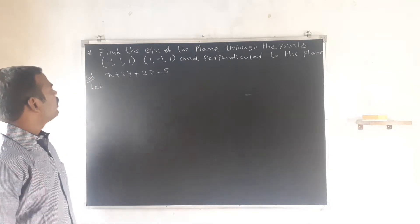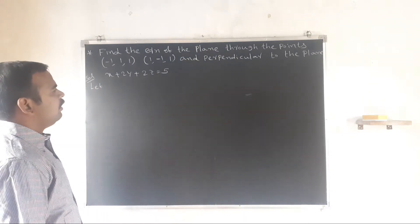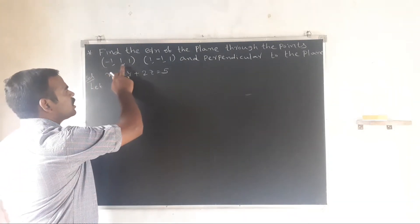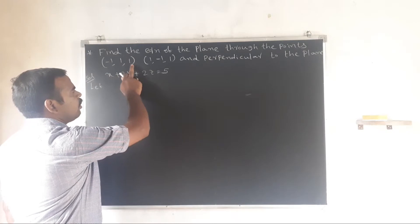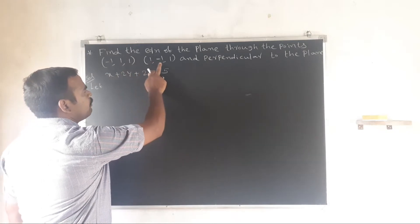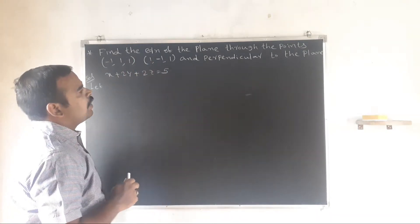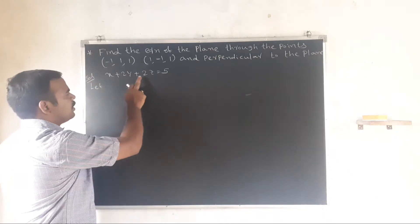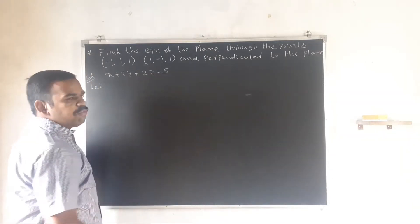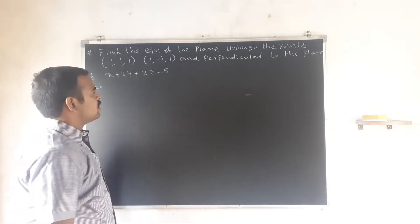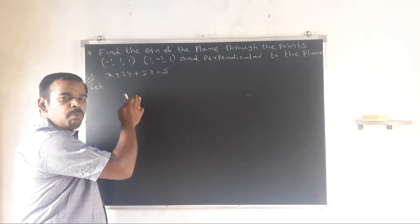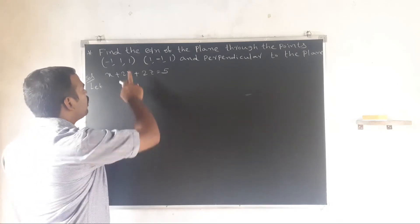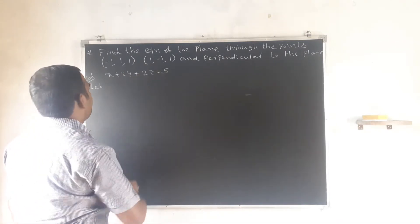Another problem: Find the equation of the plane through the points (-1, 1, 1) and (1, -1, 1), and perpendicular to the plane x plus 2y plus 2z equal to 5. Last class we did three points. Here we have two points and one perpendicular plane condition.